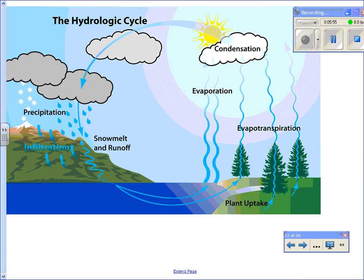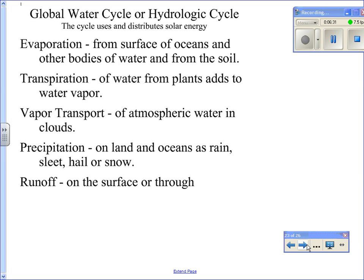You have evaporation from the ocean, evapotranspiration from plants and vegetation. Then it goes to the process of condensation, going from gas phase to liquid phase. Then eventually you have precipitation. Some infiltrates the ground while others run across the surface and then back into the main body of water, and the cycle repeats itself.